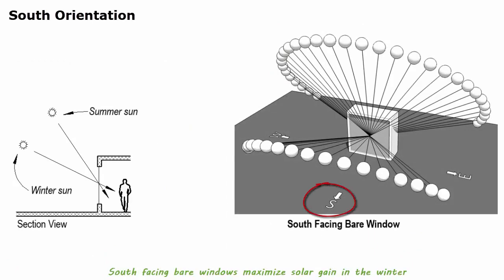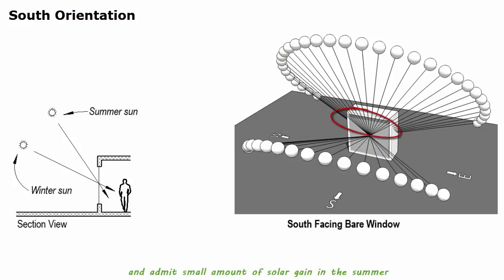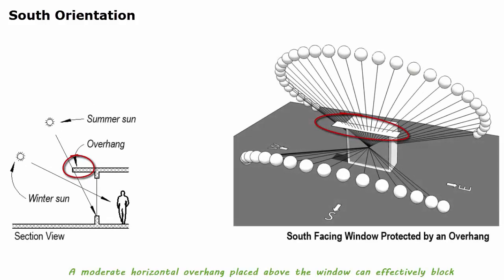South-facing bare windows maximize solar gain in the winter and emit a small amount of solar gain in the summer. A moderate horizontal overhang placed above the window can effectively block the unwanted summer sun angles while maintaining the view to the outside.